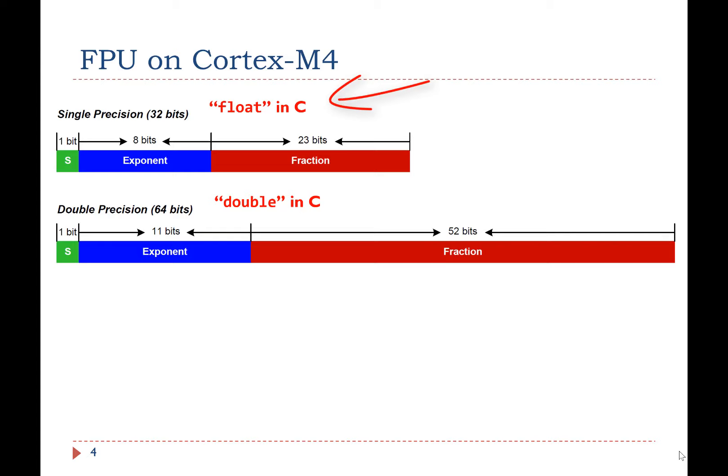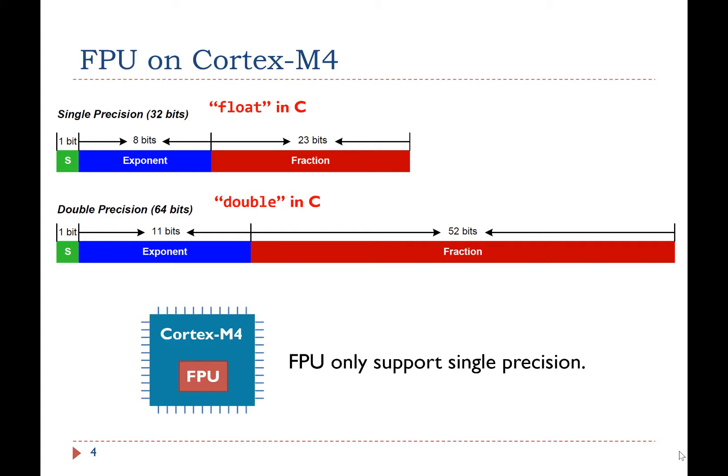For a float, 32 bits are used to represent a floating point number. For double, 64 bits are used. The FPU on Cortex-M4 can fully support single precision operations, but not double precision.